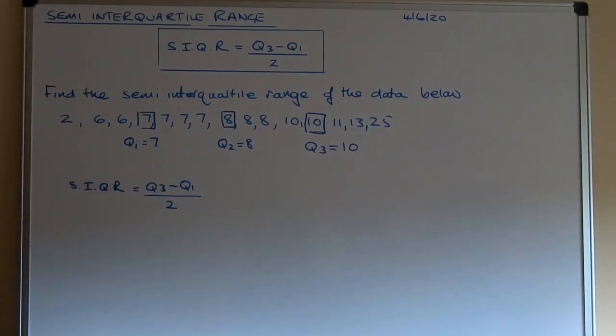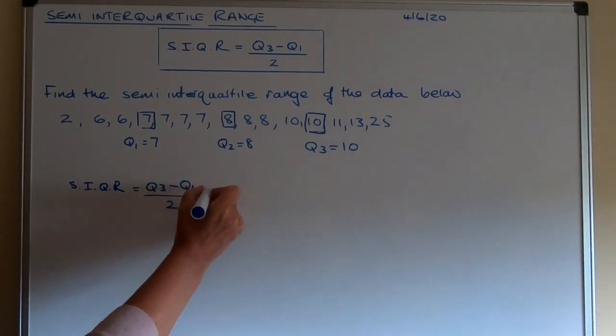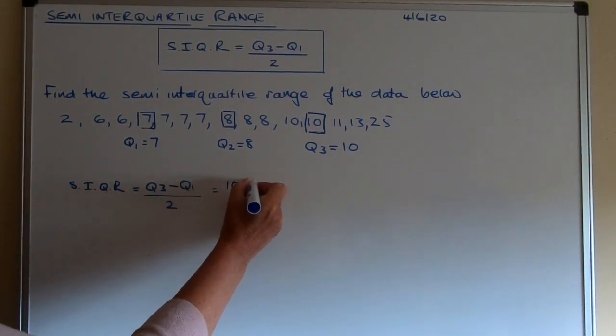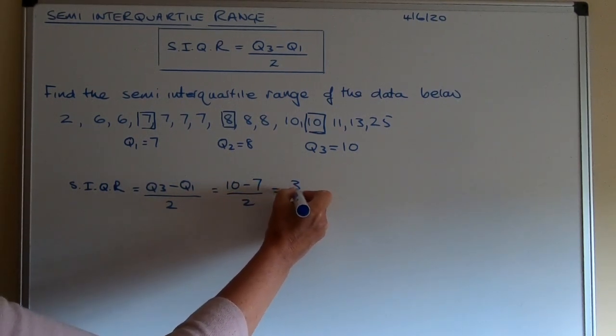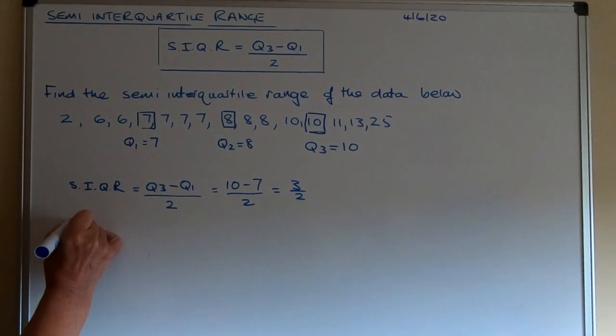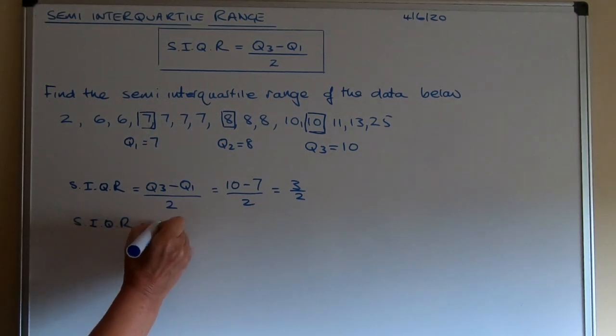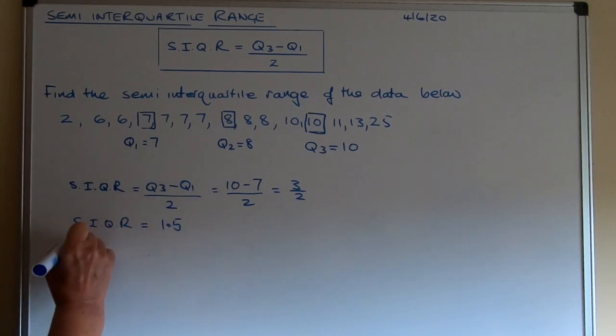Now we've done the work of finding the quartiles. So if we put that into the formula that would be Q3 is 10 minus Q1 is seven divided by two, three over two. So the semi-interquartile range, three divided by two is 1.5.